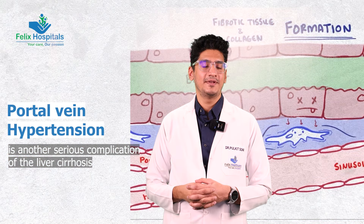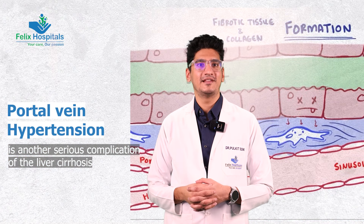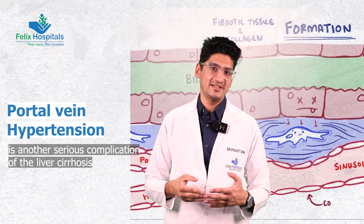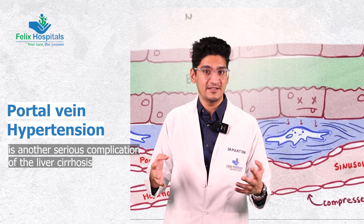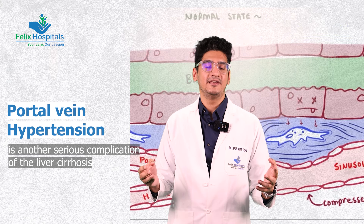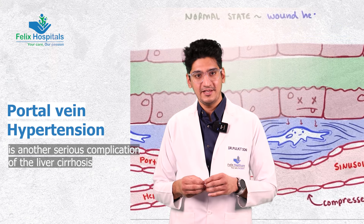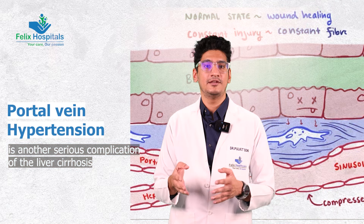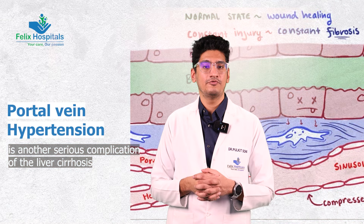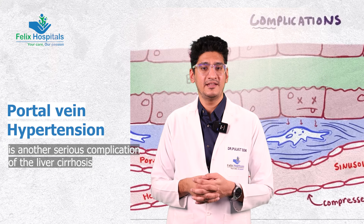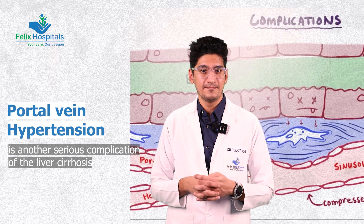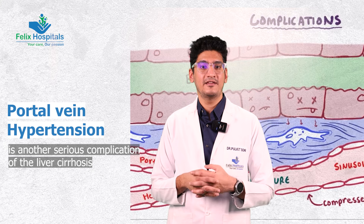Another complication of cirrhosis is portal hypertension — a phenomenon in which the pressure increases in the portal venous system. We can detect it easily on ultrasound. The changes we see include an increase in the diameter of the portal vein, and a decrease in portal vein velocity to less than 12 cm per second. We also see collaterals developing in various areas such as peri-esophageal, peri-splenic, and peri-portal regions.